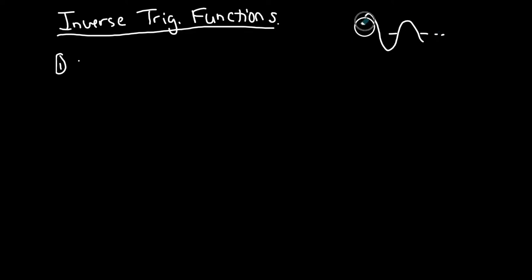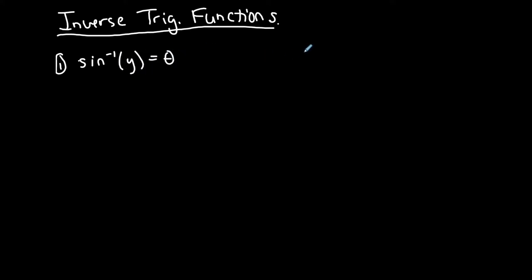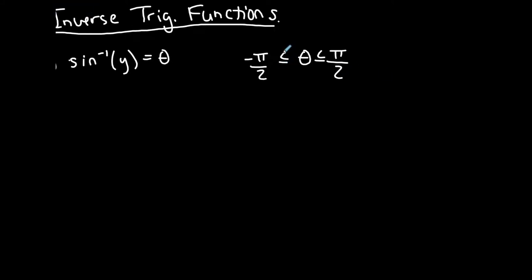What we do with a trigonometric function is restrict the domain so that we can actually find its inverse. If you want to take the inverse of a sine function, you need to remember that the output angle is restricted between negative pi over two and pi over two — that's either quadrant one or quadrant four.